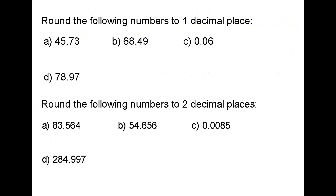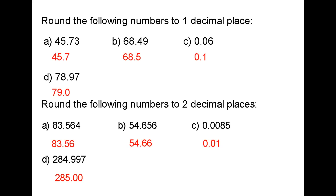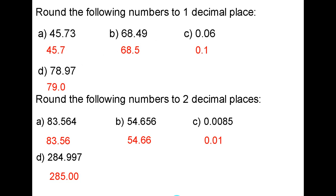Here are some questions for you to try. Please have a go at the questions, pause the video, and then when you're ready for the answers, press play. Here are the answers. One thing that's really important to note is that in question D, we want to round to one decimal place. I underline the 9, which is the first number after the decimal point, and draw a dotted line. The 7 tells me to round the 9 up, giving an answer of 79. But because I want to round to one decimal place, I need to give my answer as 79.0. Similarly, for question D of the second set of questions, I need to give my answer as 285.00 to show that I have rounded to two decimal places.